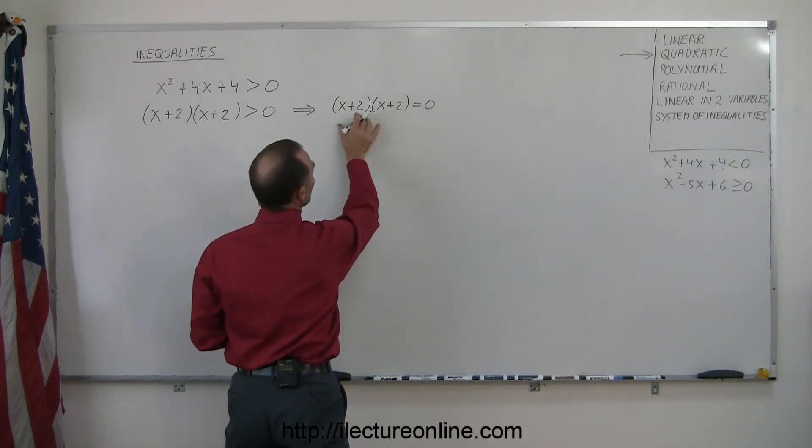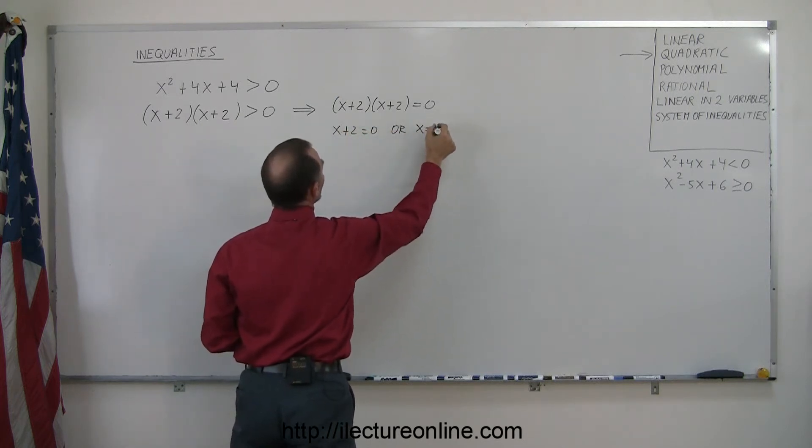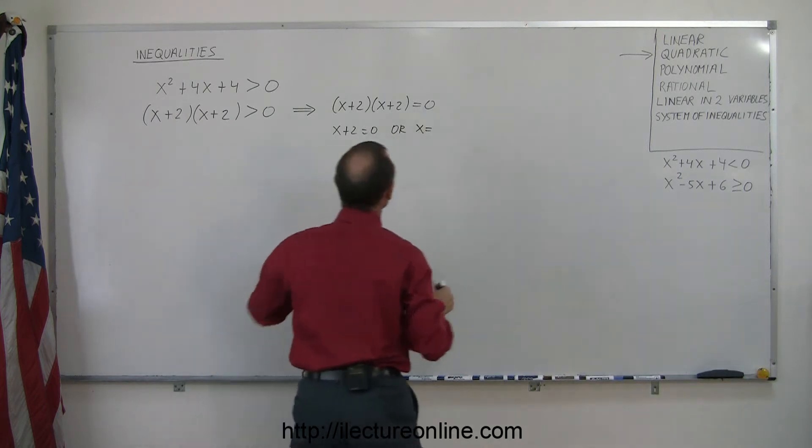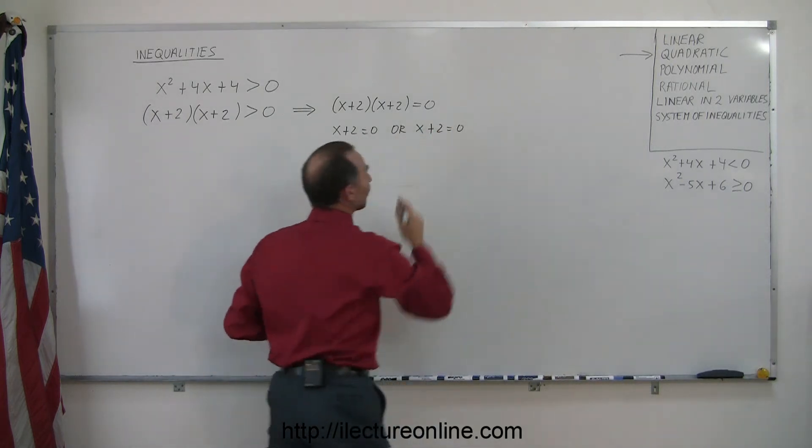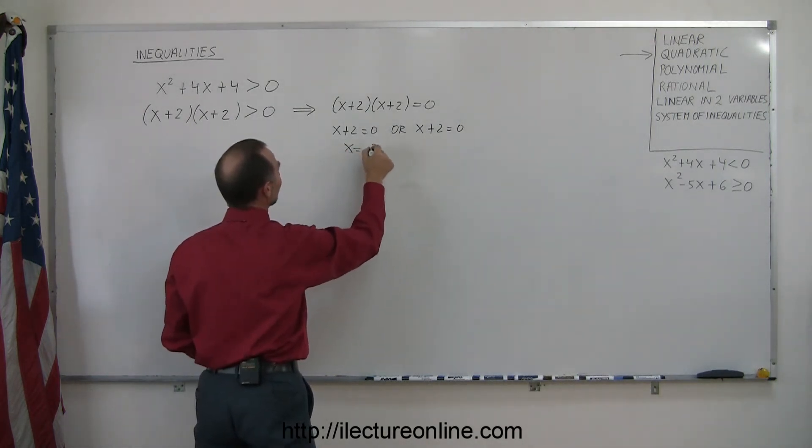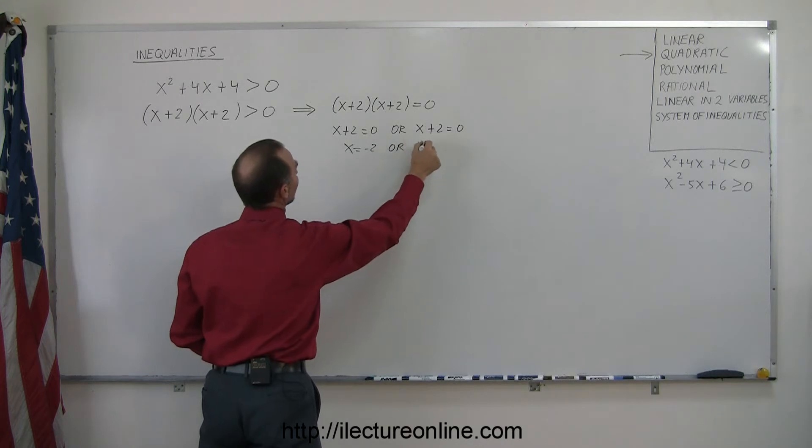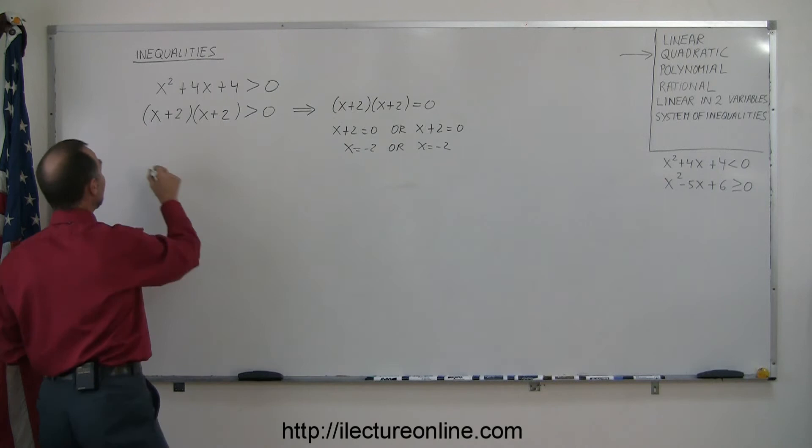When we multiply two binomials and we get a zero, that means either the left binomial is equal to zero or the right binomial is equal to zero. x + 2 = 0, and of course they're the same binomials so we'll get the same solution. You get x = -2 or x = -2, which means there's only one critical point here, one point on the number line.